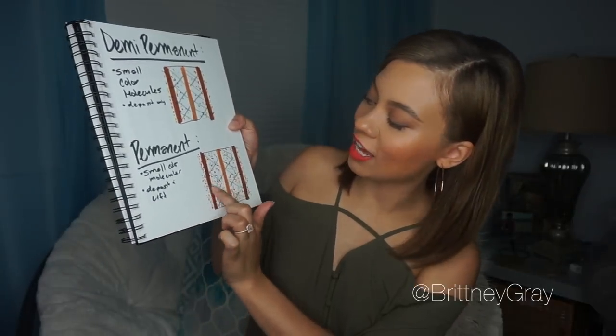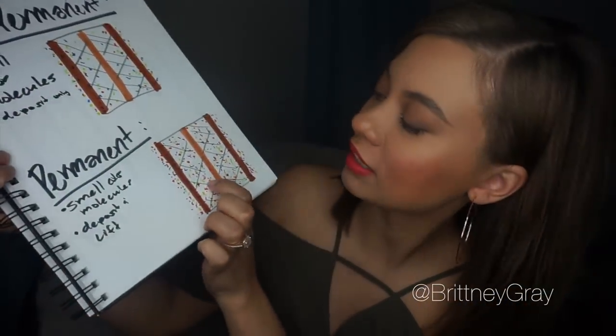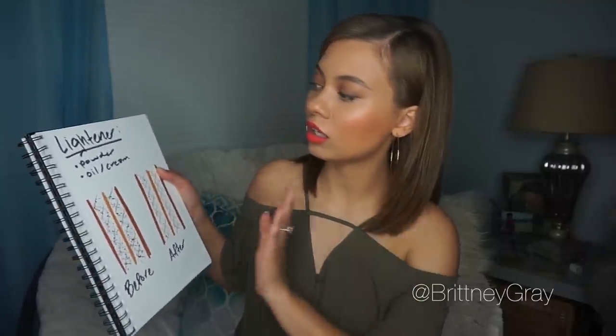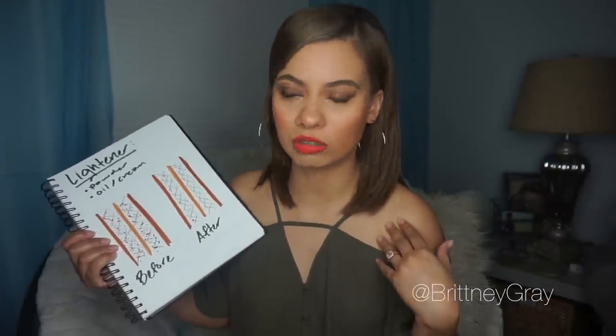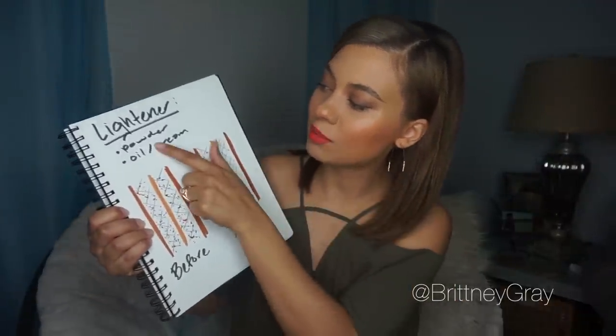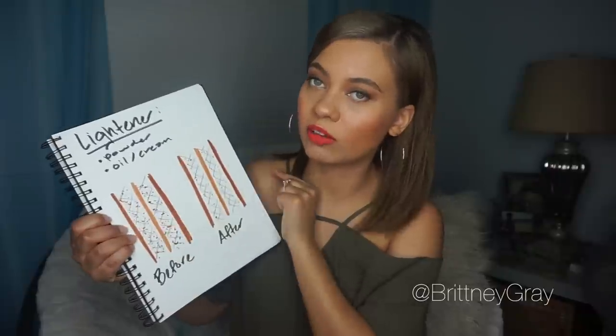Permanent dye deposits and lifts — if you're going lighter it lifts, and if you're going darker or covering grays it just deposits. The only way to get rid of it is to use a hair color remover, bleach it out, grow it out, or cut it off. It is in that cuticle and that cortex. Now moving right along, let's talk about lightener — also known as bleach in the salon. Lightener usually comes in a powder, oil, or cream form.